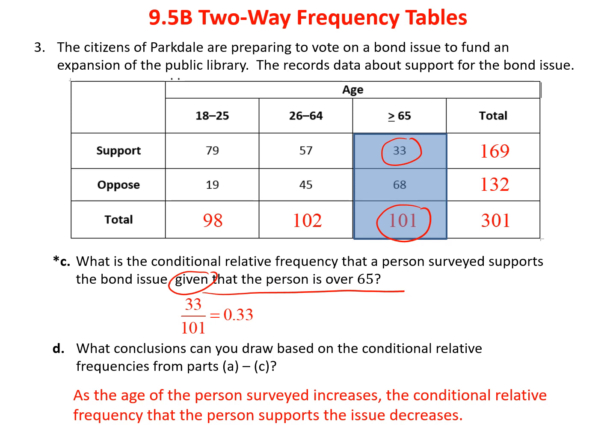The major conclusion you draw is that the younger they were, the more likely they were to support the bond. The older they were, the more likely they were to oppose it. If you're 18 to 25, you're maybe married with little kids and thinking you want libraries for your kids. When you're a senior citizen, maybe you're thinking you don't have kids, so you don't need libraries. At least we can draw the conclusion that the older they got, the less likely they were to support it.